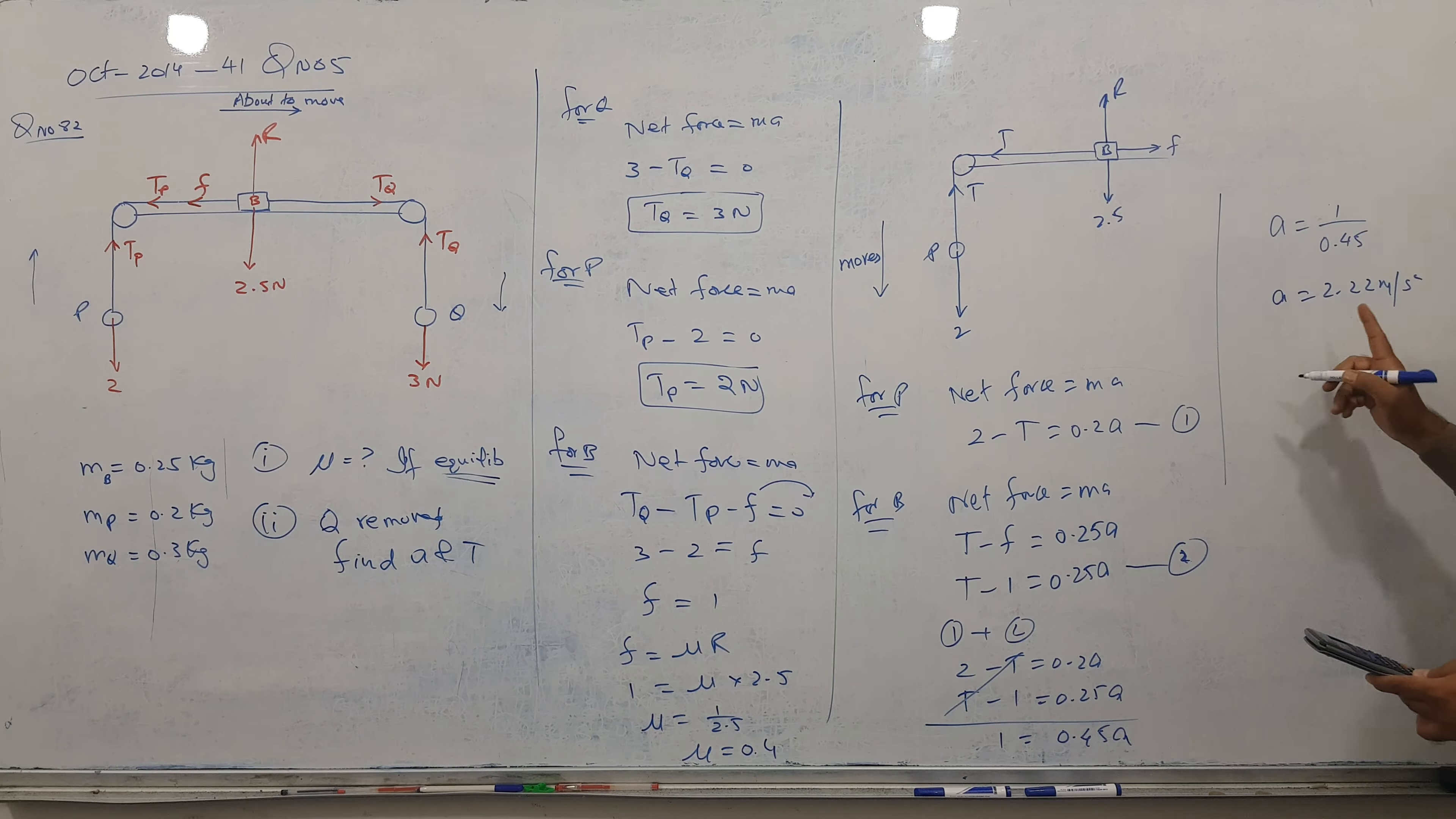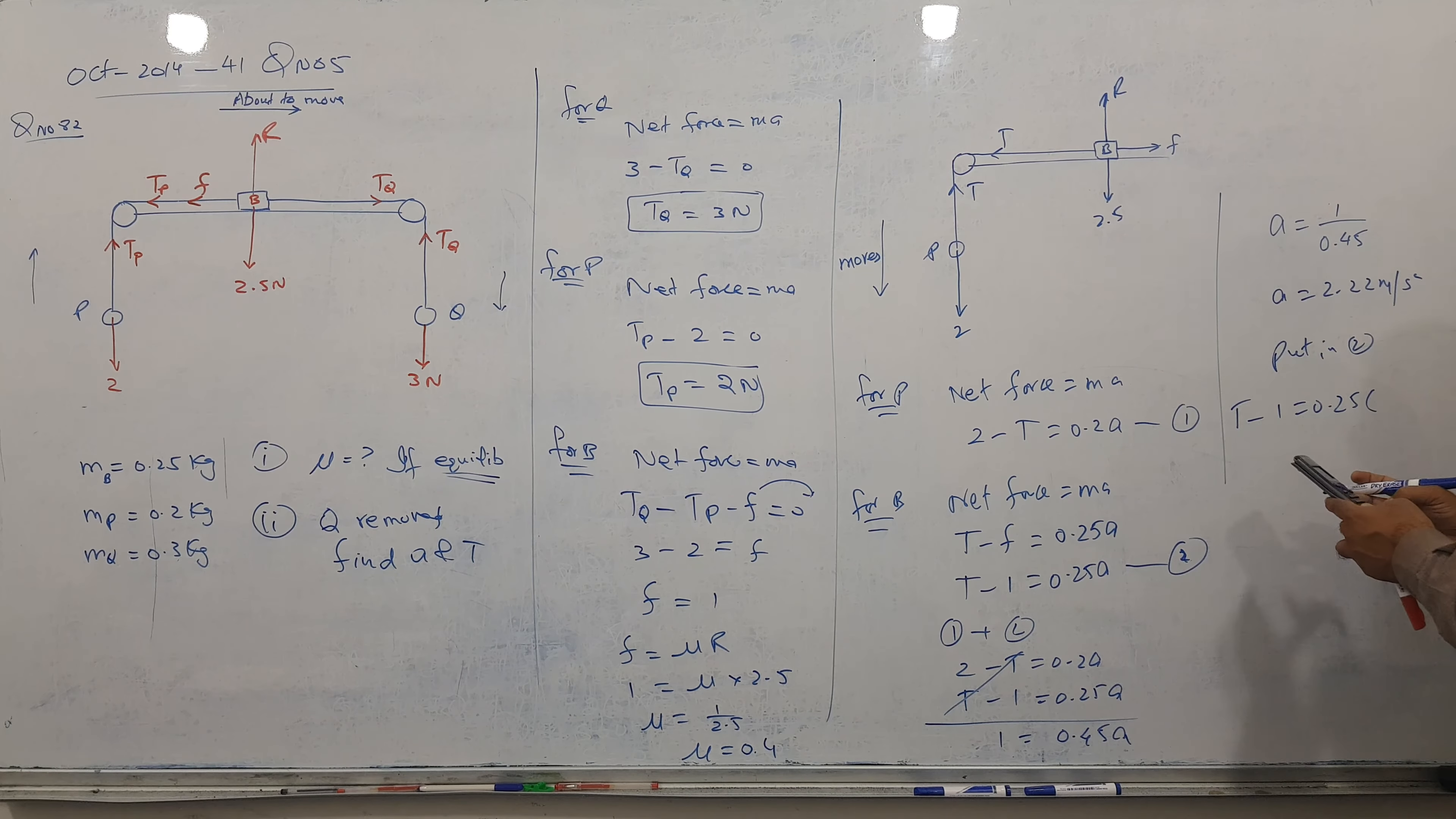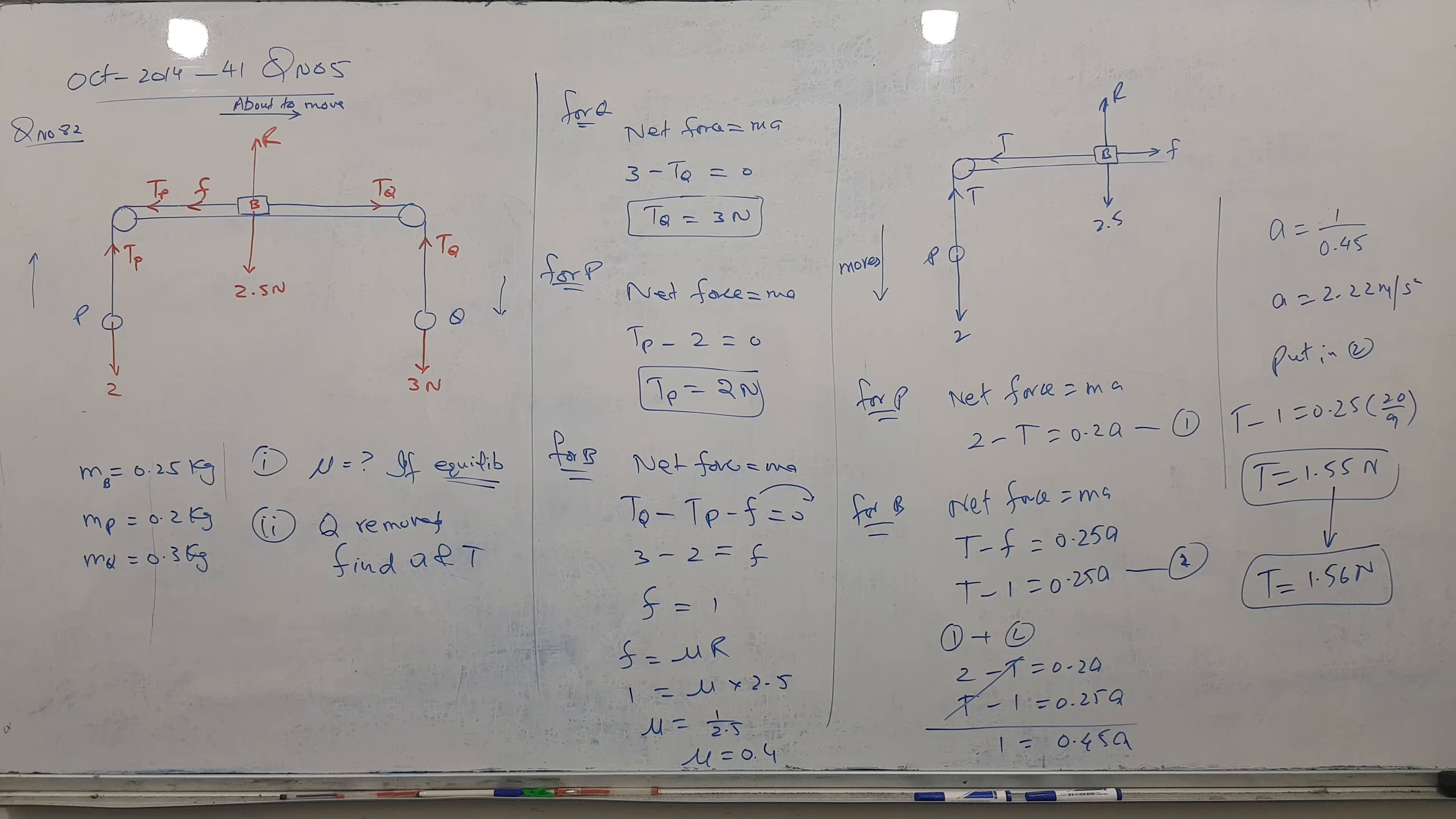And I need tension, this value I can put in this equation, put in 2. So tension minus 1 equal to 0.25 times 2, I write in fraction form, 20 by 9. So tension becomes 0.25 times this and plus 1, and answer is coming here, 1.55 Newtons. And that's it. Okay, there is one correction here, this is down to 3 significant figures, so not 1.55, it will become 1.56. That's it.